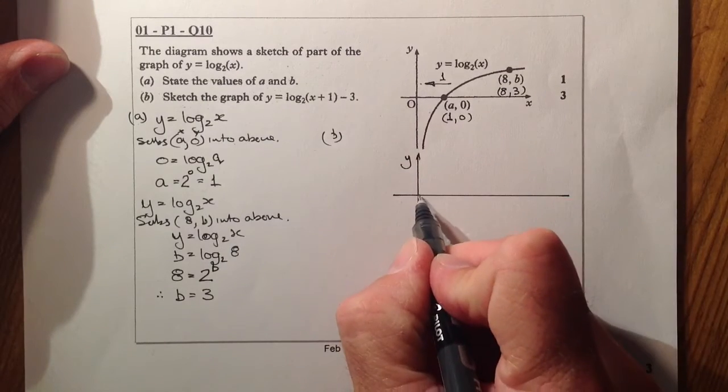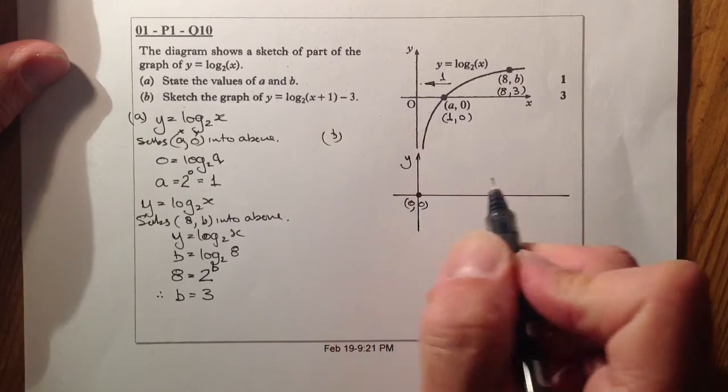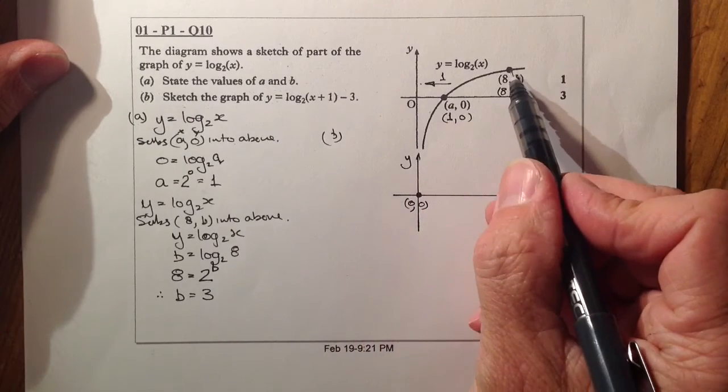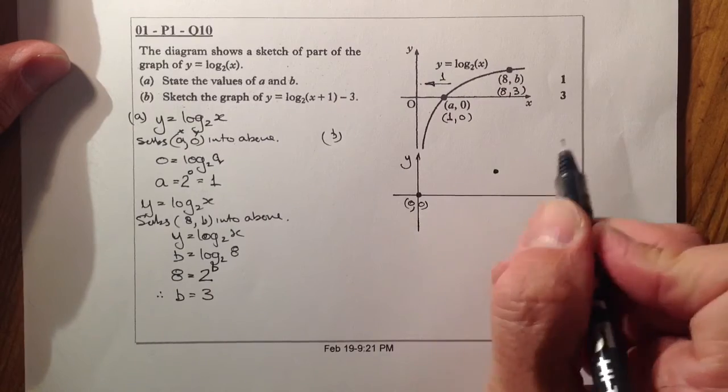So I know that's 1, 0, so that must be the 0, 0 there. And I know that that's 8, 3, this point here, so that must move 1 and that must go to 7, 3.